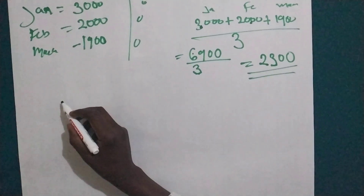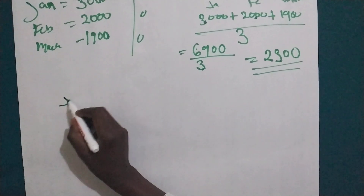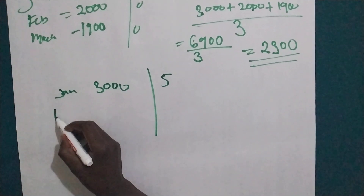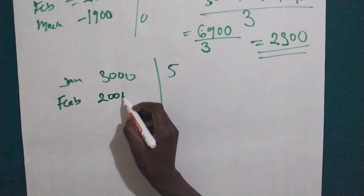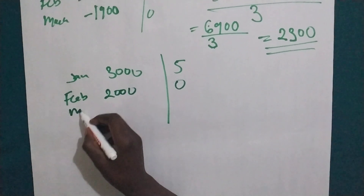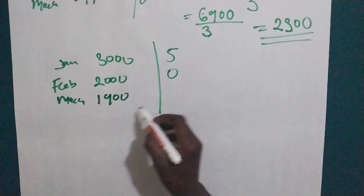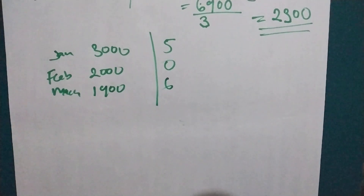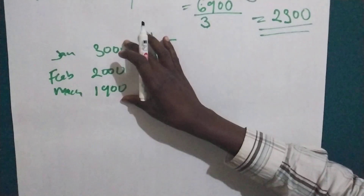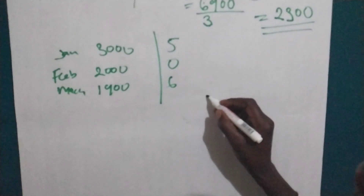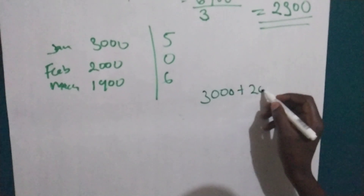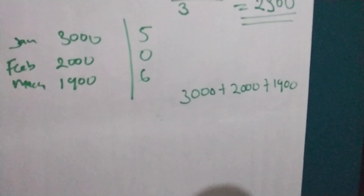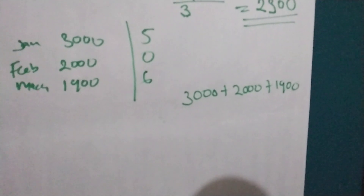Let's use the very same example but with stock-out. In January, you consumed 300, and then stock is out on day 5. In February, you consumed 200, and then stock-out is zero. In March, you consumed 190, and stock-out is on day 6. We are going to add 300 plus 200 plus 190, which gives us 6900.